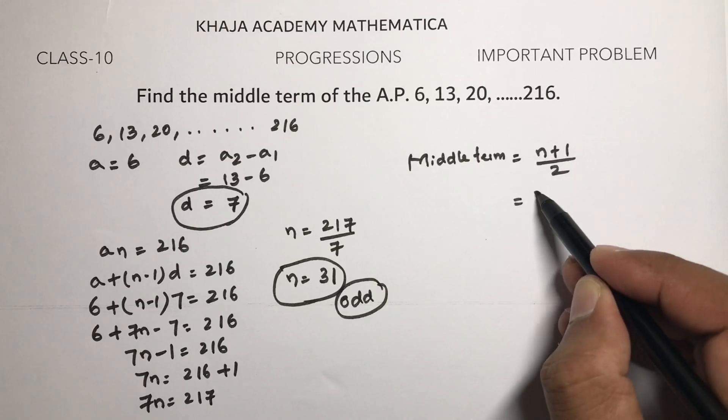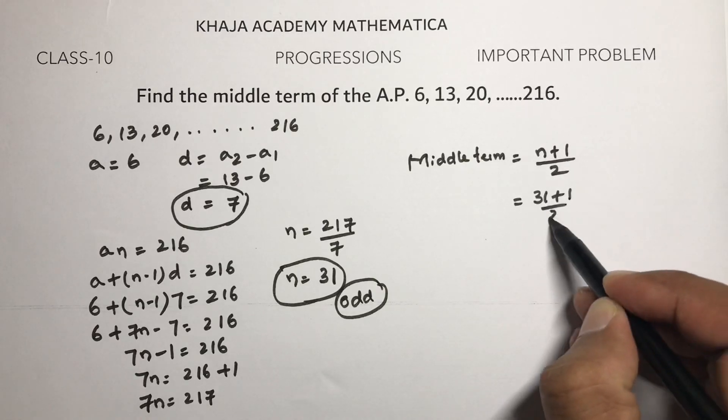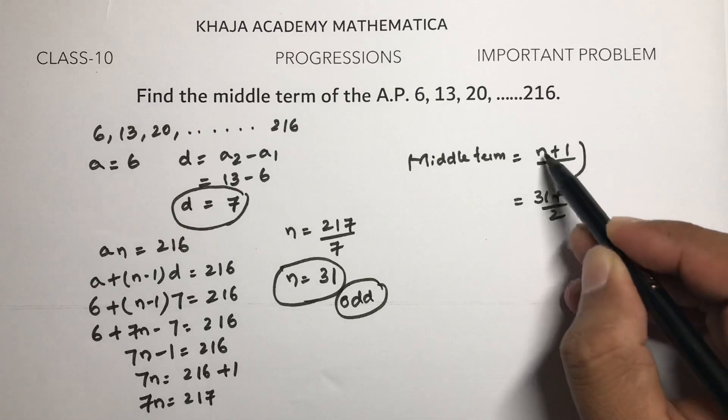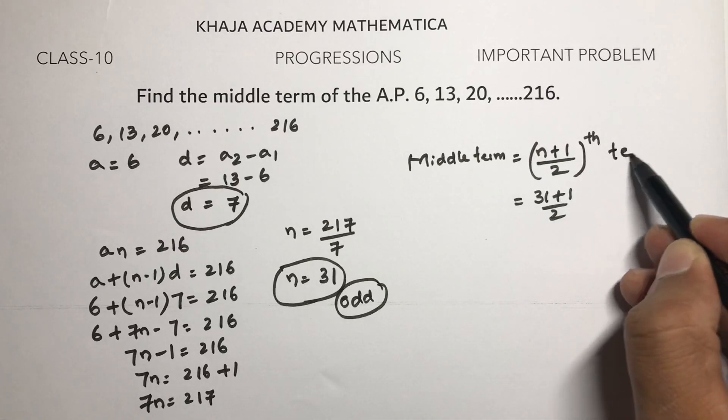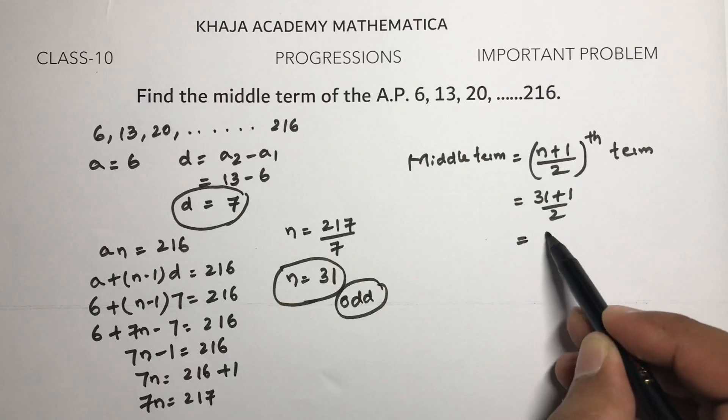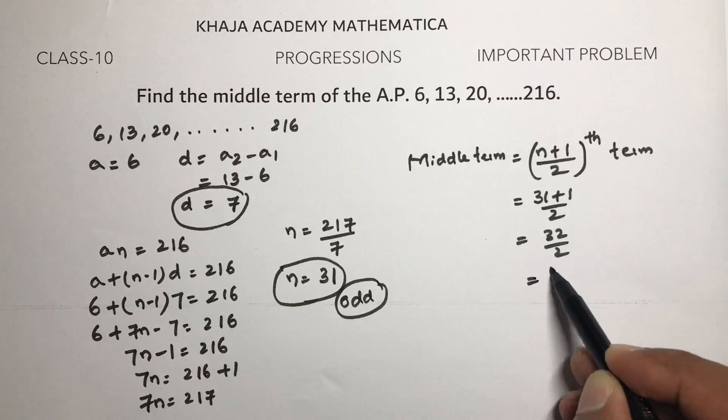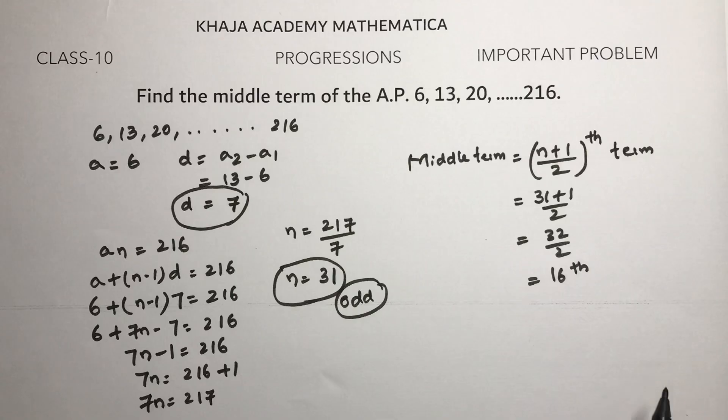So (31+1)/2 = 32/2 = 16. Therefore the 16th term will be the middle term.